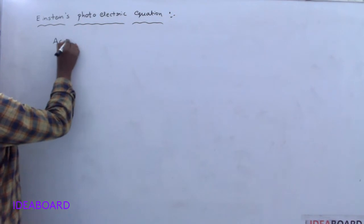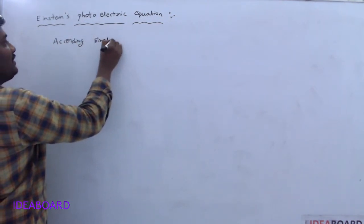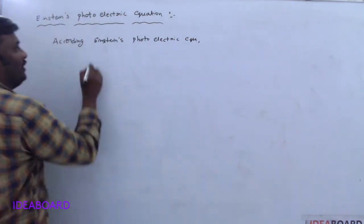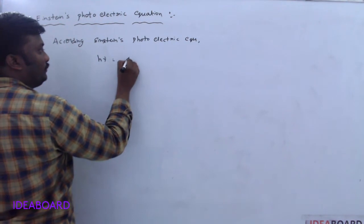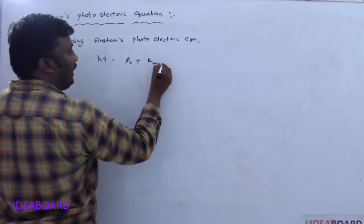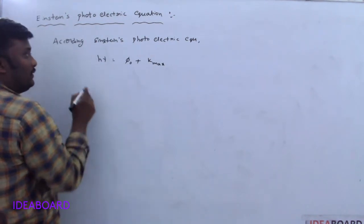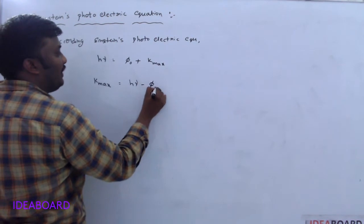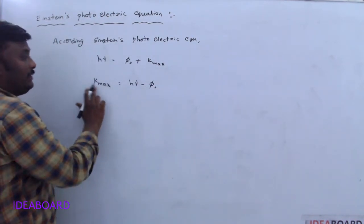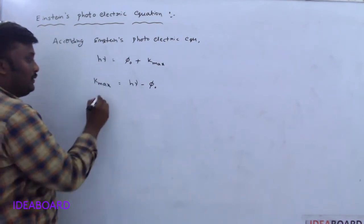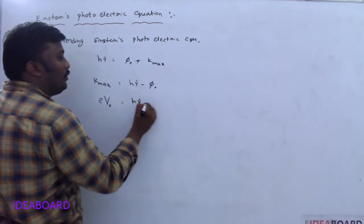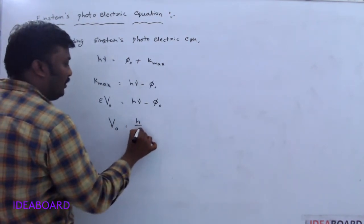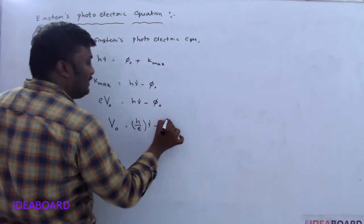According to Einstein's photoelectric equation, h·ν = φ₀ + K_max, where φ₀ is the work function. So K_max = h·ν − φ₀. We know the relation between maximum kinetic energy and stopping potential or cutoff potential: e·V₀ = h·ν − φ₀. Therefore, stopping potential V₀ = (h/e)·ν − φ₀/e.